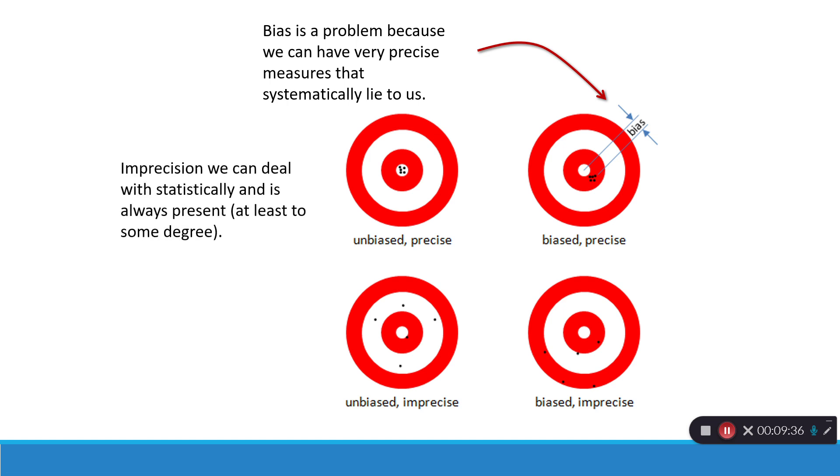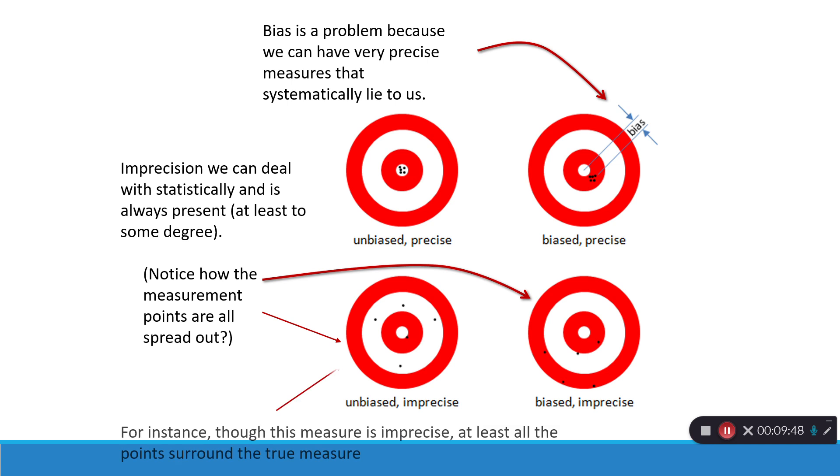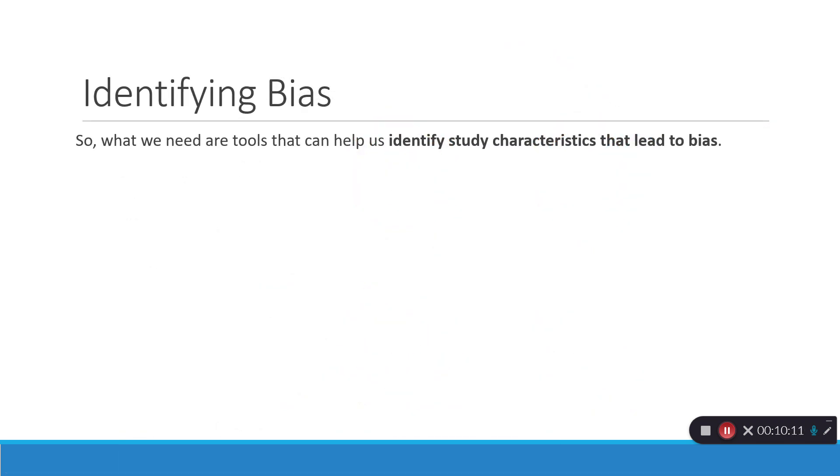So, imprecision we can deal with statistically, and it's always present. Always, always, at least to some degree. But you notice how the measures on those bottom targets are all spread out. That is imprecision. And we can still have bias and imprecise because, again, we have points that are spread out. We have very different measurements, but they don't cluster around the center of what we're taking to be in this graphical analogy, what the true measure is. So, what we need are tools that can help us identify study characteristics that lead specifically to bias.